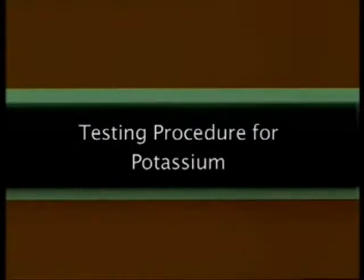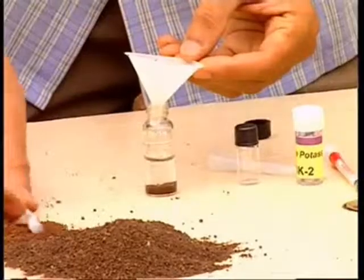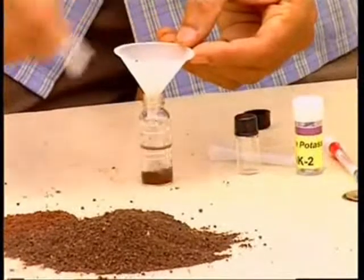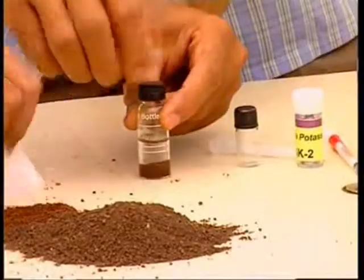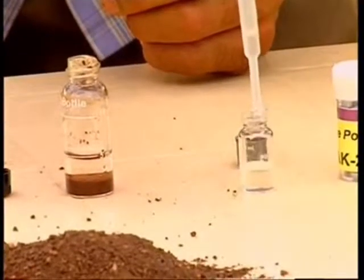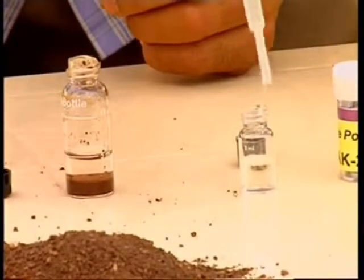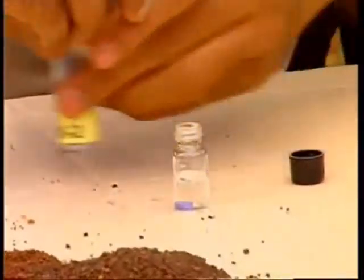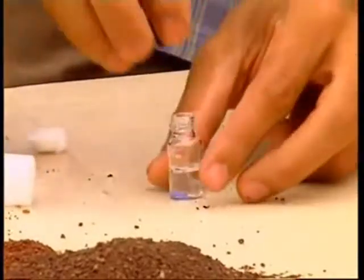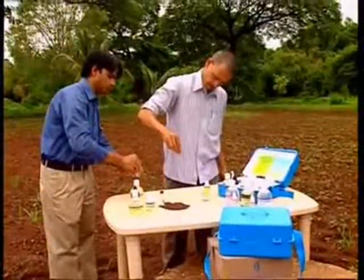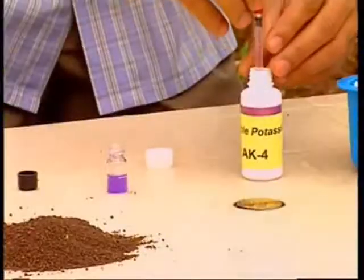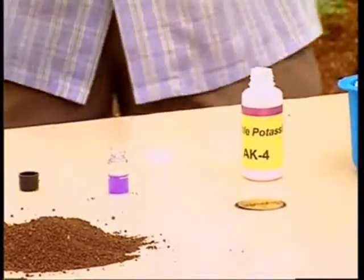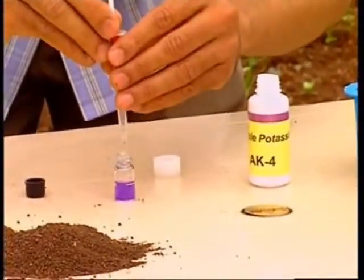Testing procedure for potassium. As given in the available nitrogen procedure, 1 gram of soil sample is mixed in reagent AP1 and after the soil has settled, 2 ml of clear solution is taken in bottle number 2 with the help of a dropper. Add 1 tablet of reagent AK2 to this and swirl the bottle gently for 5 to 6 minutes to dissolve the tablet completely.